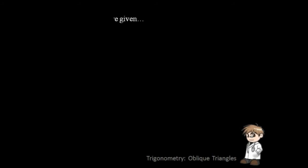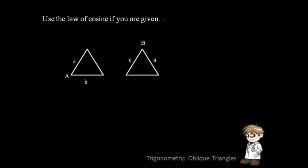Now, how do you know which law to use on a given triangle? Simply determine if the given can result in the Law of Cosine. There are only two possible conditions: if you're given an angle with two adjacent sides, or if you're given three sides, you will use the Law of Cosine. If these are not the ones given, then use the Law of Sine.